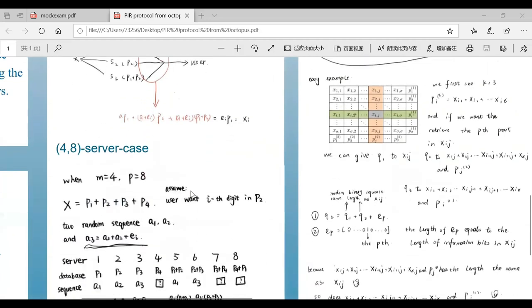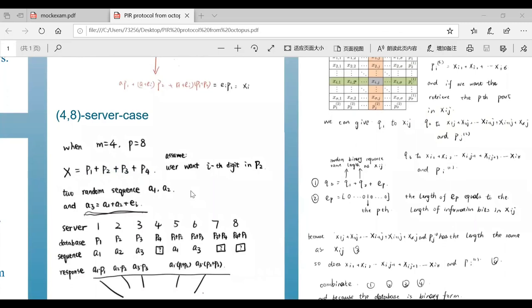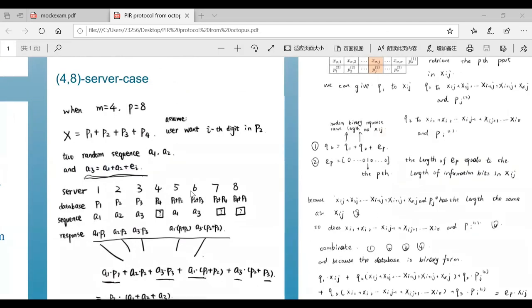And then the 4,8 server case is as follows. It may be a little more complex than the 2,3 server one. And in this time we divide x into four parts.